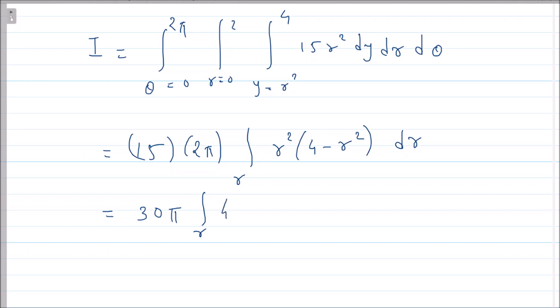If you don't understand this step you can ask me in the comment section. This is r, this is in limits of r: 4r² - r⁴ dr. This is 30π.